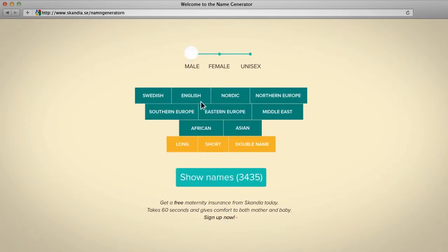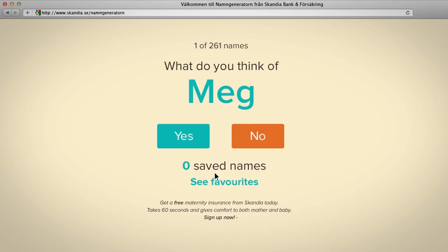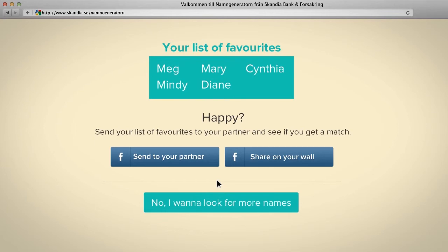Choose the gender of your unborn. Specify what kind of name you're looking for. You'll get a hundred-and-something suggestions. Then, like or dislike. Sooner or later, you'll find a couple of names that you like. Perhaps even something you wouldn't even have imagined before.